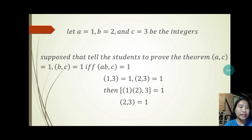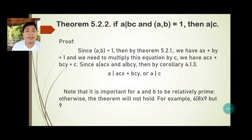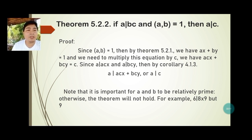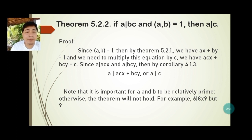Theorem 5.2.2: If a divides bc and gcd(a, b) = 1, then a divides c. Proof: By Theorem 5.2.1, ax + by = 1. Multiplying by c: acx + bcy = c. Since a divides acx and a divides bcy, by Corollary 4.1.3, a divides acx + bcy, so a divides c.